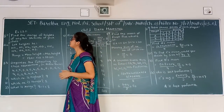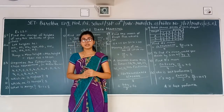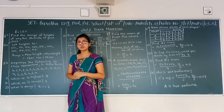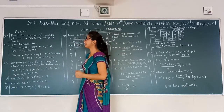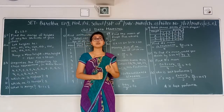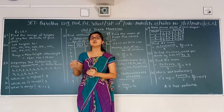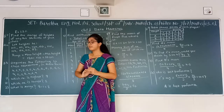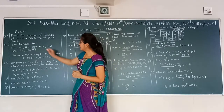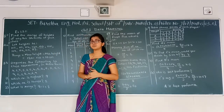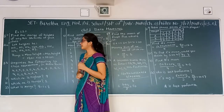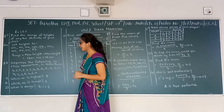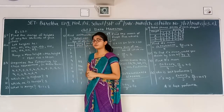Question number 1: we have to find the range of heights of any 10 students of your class. We are assuming heights as 170, 111, 113, and so on. We have to find the range by subtracting the lowest number from the highest number. The highest number is 120 and the lowest is 110, so the range is 120 minus 110, which gives 10.